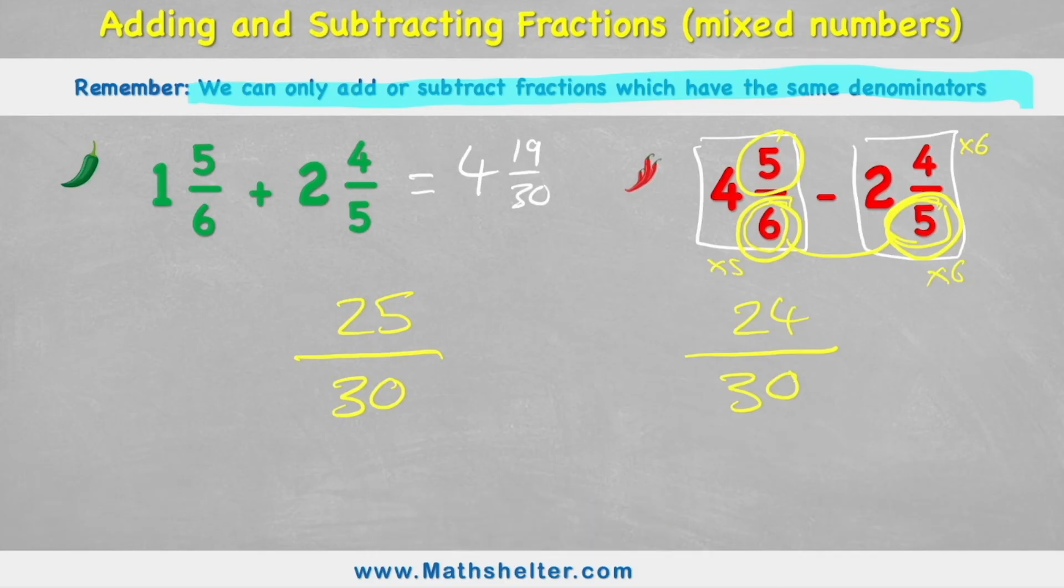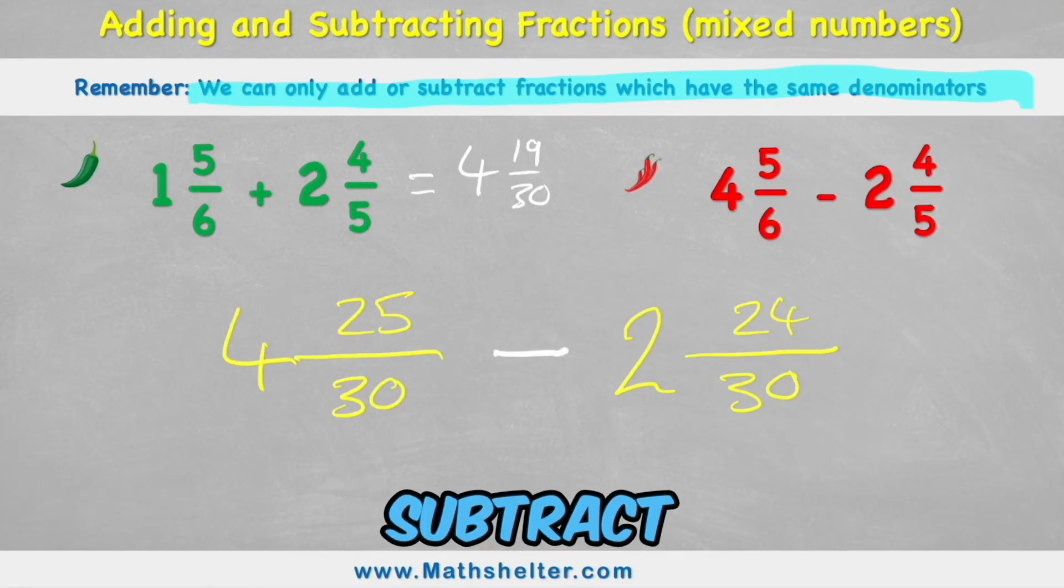Put back my whole numbers. First one was 4. Second one was 2. So now I have 4 and 25 thirtieths subtract 2 and 24 thirtieths.